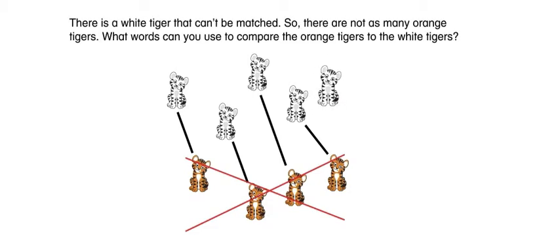There is a white tiger that can't be matched, so there are not as many orange tigers. What words can you use to compare the orange tigers to the white tigers?